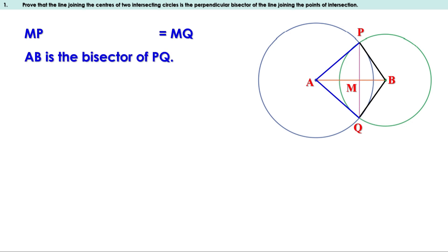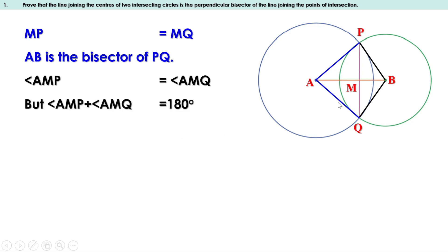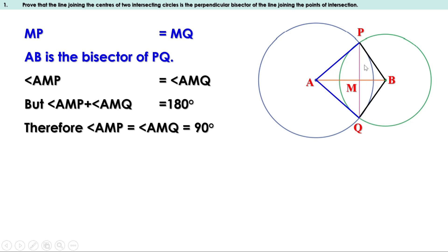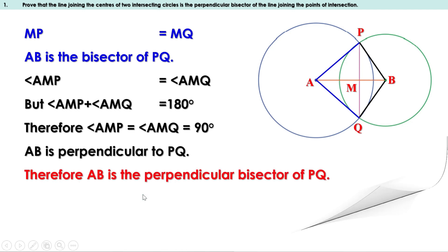Since these two triangles are equal, angles AMP and AMQ are also equal. But we know the sum of these two angles is 180°. These two angles are equal and their sum is 180°, therefore each angle should be 90°. When these two angles are 90°, we can say AB is perpendicular to PQ. AB is perpendicular to PQ and AB bisects PQ. Therefore AB is the perpendicular bisector of PQ.